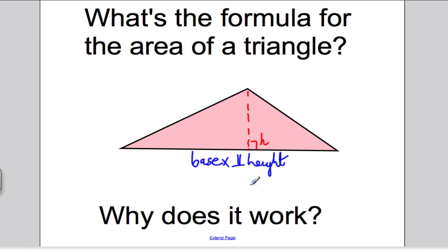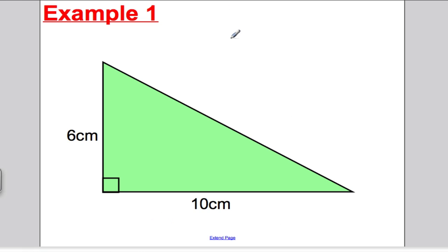So that's a common area of triangle formula we all know. Let's do a couple of examples. Here's one here. What's the area of this? Well, it's the area is going to simply be 6 times 10 divided by 2. And that's 30. Don't forget the unit, centimetres squared.